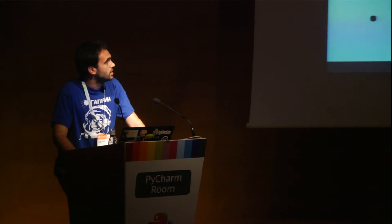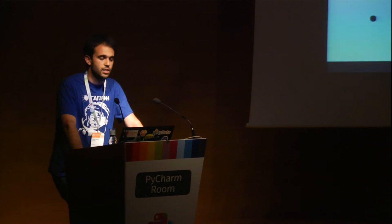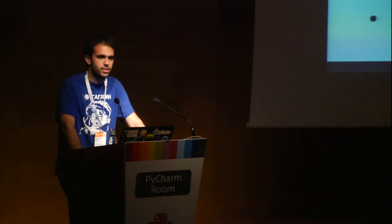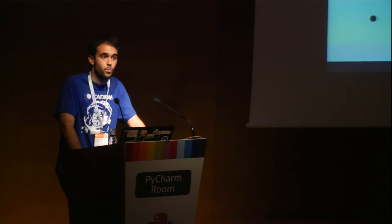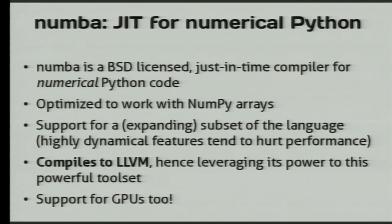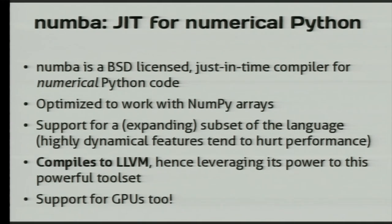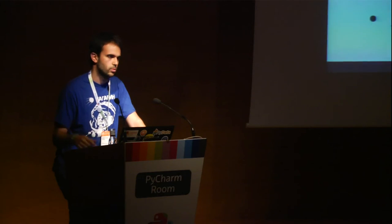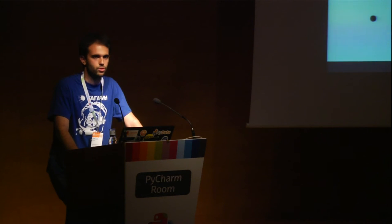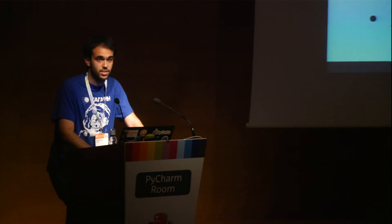Then some years after that, I discovered Numba, which is a project by Continuum Analytics, and it's free. It's meant to accelerate numerical Python code that uses a lot of number crunching, numerical computations, and NumPy arrays. It supports a subset of the language and compiles to LLVM, which is the compiler toolset that is getting very famous now. It also supports GPUs. So I tried to rewrite all the algorithms that were included in thousands of lines of Fortran, only in Python, and let's see how it goes.